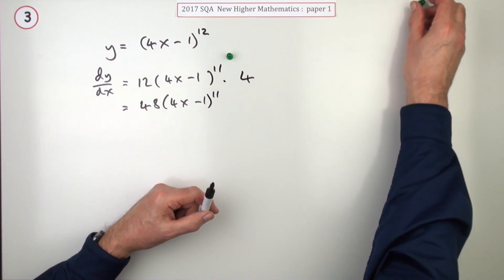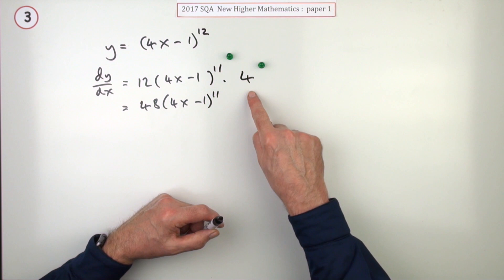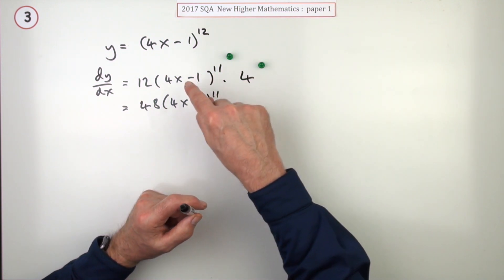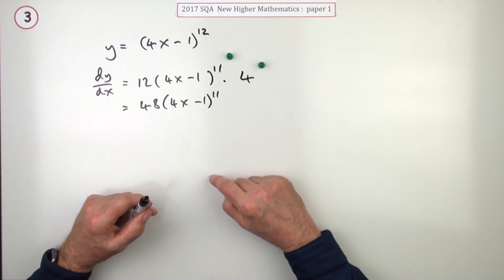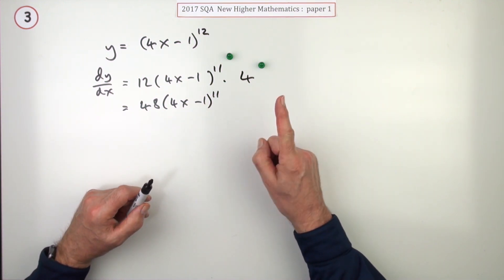And you're not to know this here—as soon as you say times 4, in other words knowing to multiply by the inner derivative, all the marks are gone. So there's no marks left for the last part, but you can't assume that'll be the case.